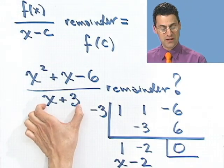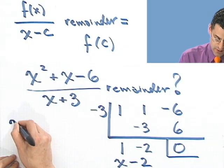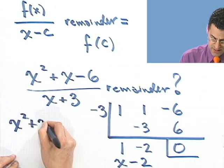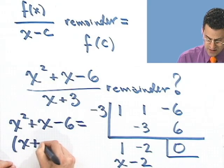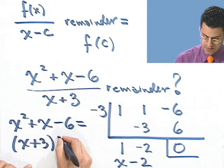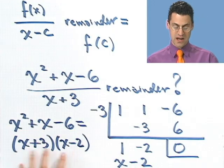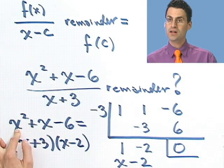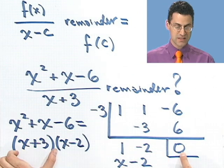Well, that means this is actually a factor of this. Because what I see is x squared plus x minus 6 equals x plus 3 times x minus 2. You see it's a factor. This times something gives me that. So there's a connection between finding a factor and seeing a root, seeing a 0 remainder.